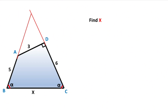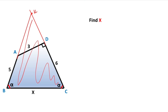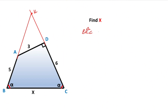First step: if we extend corner D and corner A like this, let's call here point K. If you focus on the biggest triangle, the biggest triangle is an isosceles triangle — triangle BKC is an isosceles triangle. Then let's call here 'a', which means this length must be equal to a plus one.